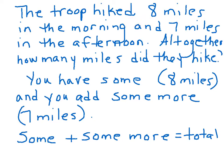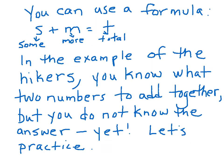Let's take a look at this example. The troop hiked 8 miles in the morning and 7 miles in the afternoon. All together, how many miles did they hike? Relatively easy problem, but we're establishing ways for your brain to remember and to think. So you have some, 8 miles, and you add some more, 7 miles. Some plus some more equals the total.